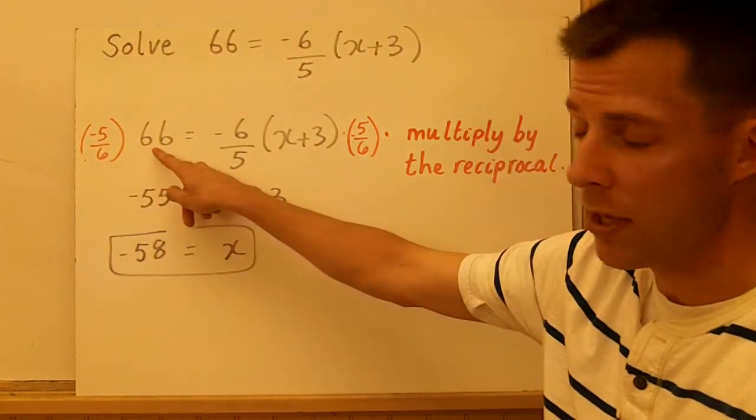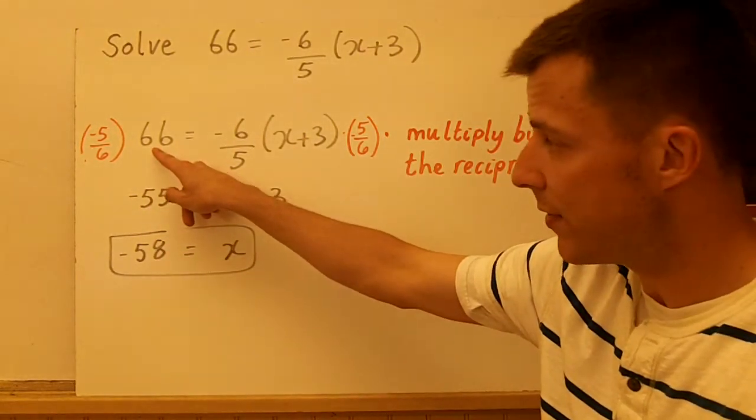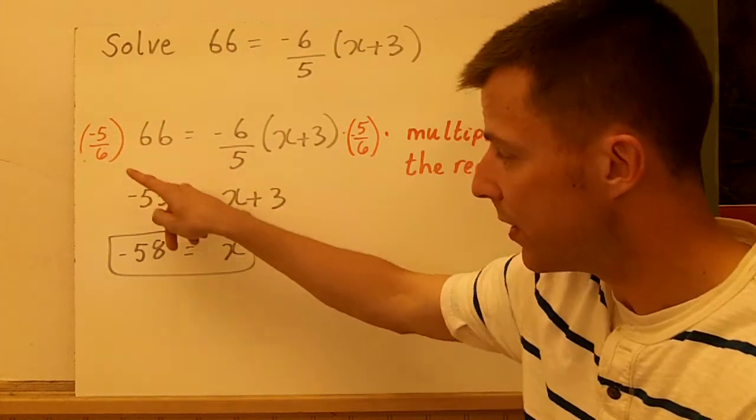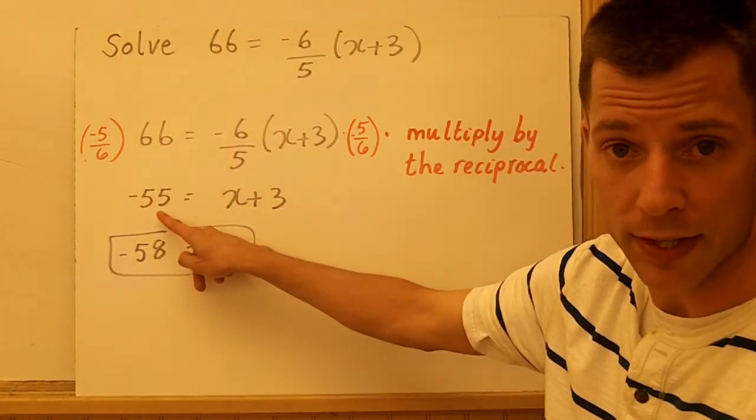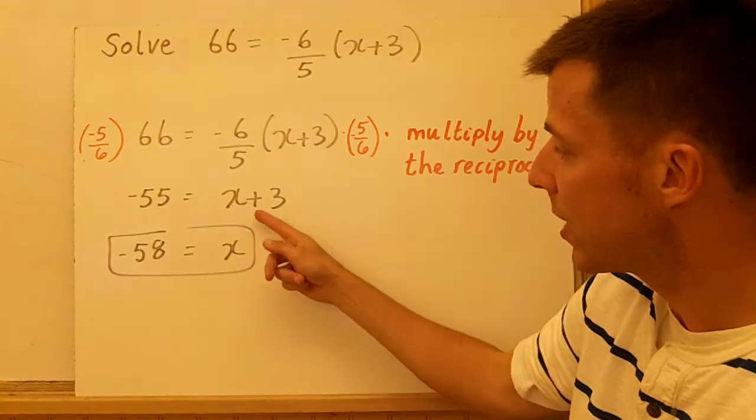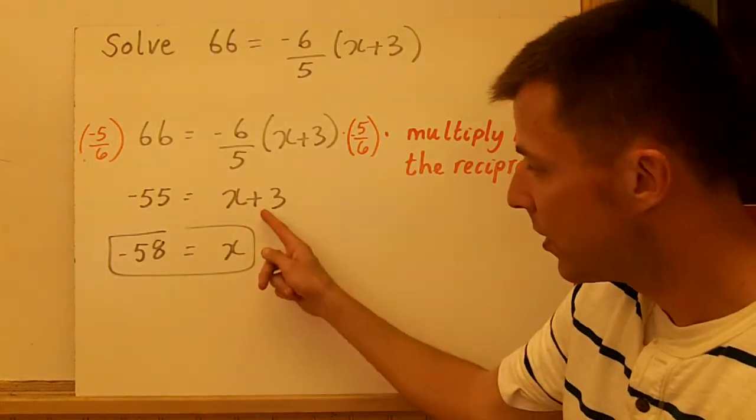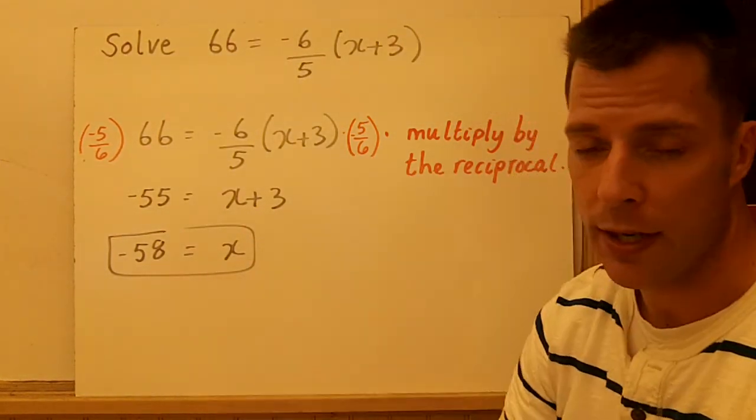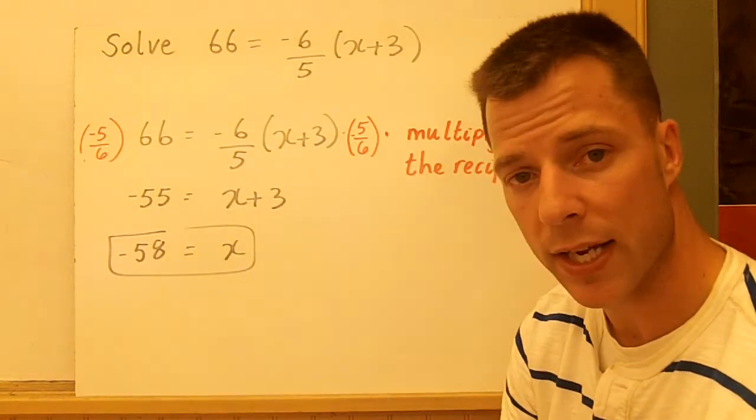6 goes into itself once. 6 goes into 66 eleven times. 11 times negative 5 is negative 55. That's where that comes in. So x plus 3 equals negative 55, subtract 3 from both sides, and you're left with x equals negative 58.